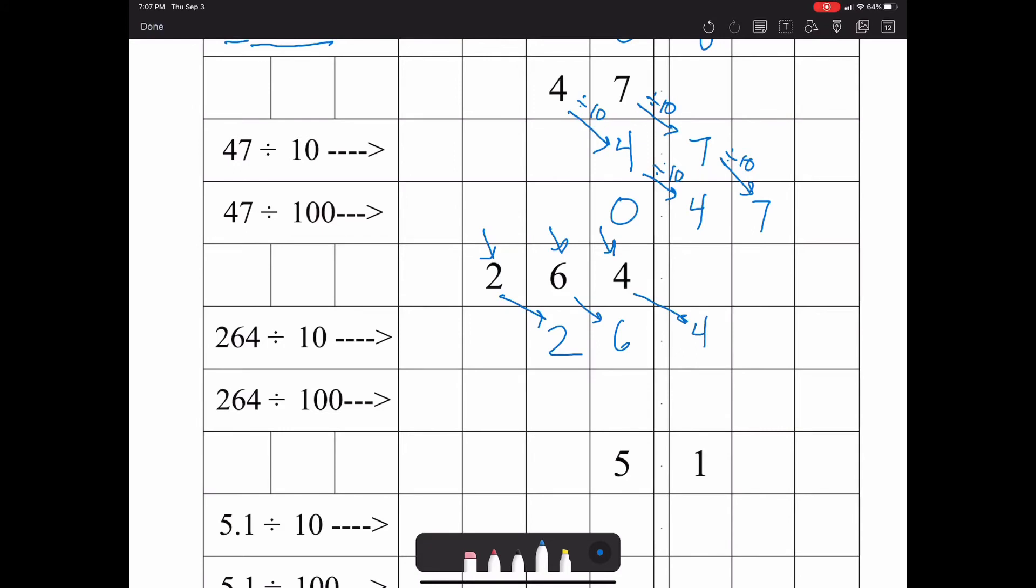Then if you divide by 100, they're going to shift over two spaces. So 264 divided by 10 is 26 and 4 tenths, and 264 divided by 100 is 2 and 64 hundredths.